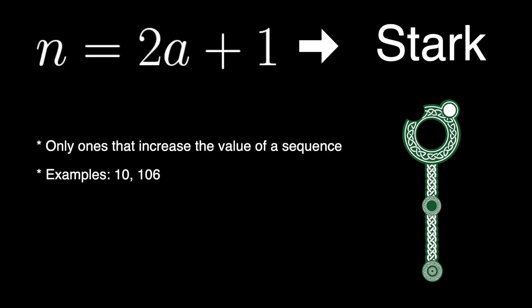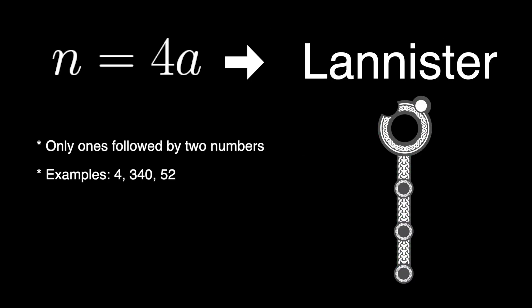If n is a multiple of 4, I call them Lannister. They are always followed by two numbers, one even and one odd, before the next branching vertex. For example, 4 is a Lannister vertex. It is followed by 2, then 1, and then 4 again. But other examples are 340 or 52.